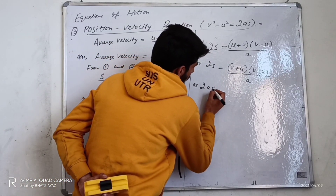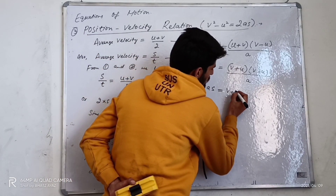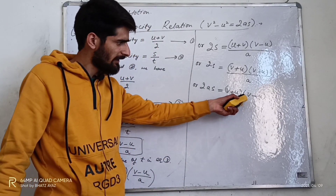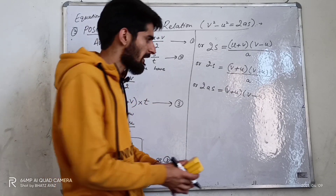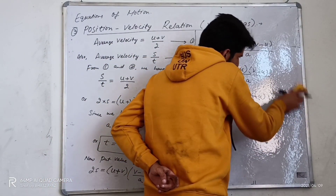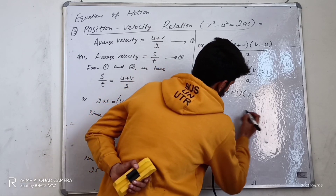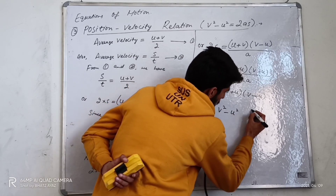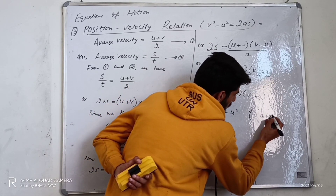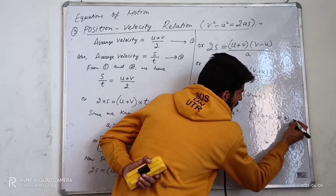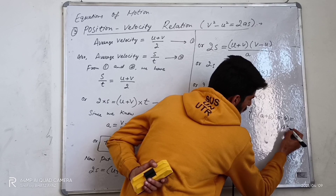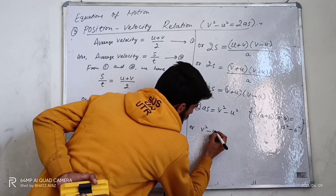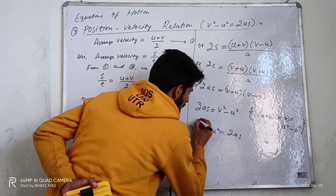I can write here: 2as is equal to v plus u into v minus u. Using the algebraic identity, a plus b into a minus b is equal to a squared minus b squared, so 2as is equal to v squared minus u squared. Therefore, v squared minus u squared is equal to 2as. This is the third equation of motion.